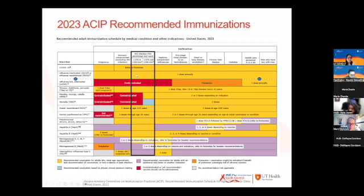Similarly, MMR, which is a live vaccine, is contraindicated for CD4 under 200, as is varicella. The other vaccines we'll discuss include Tdap/Td, recombinant zoster vaccine, HPV, and different types of pneumococcal vaccines. We'll also cover hepatitis A, hepatitis B, and meningococcal. Meningococcal group B and pneumococcal influenza B are recommended not for HIV specifically, but for other indications mainly asplenia and related complications.